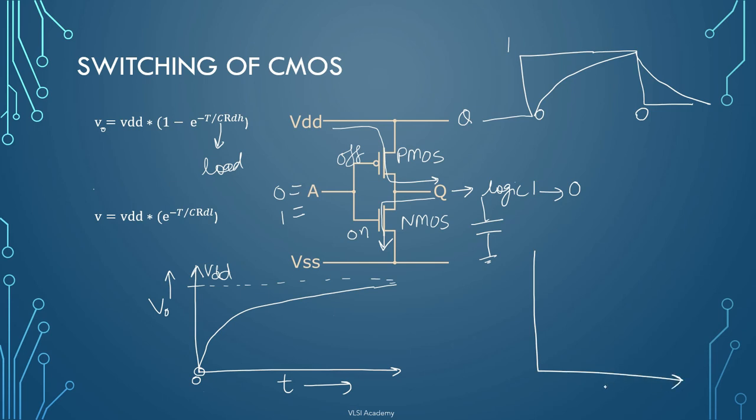Similarly we can plot graph for discharging of waveform. Here T is on x-axis, output on y-axis. Now when initially T will be 0, at that time this e raised to the power 0 means V_out will be equivalent to V_DD. So let's say your logic high is V_DD. So initially your output voltage will be at V_DD, that is logic 1.